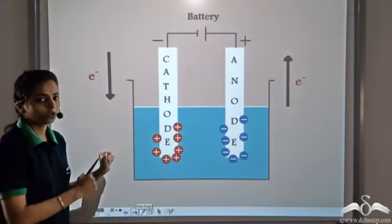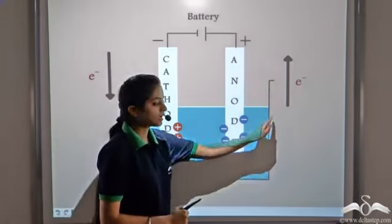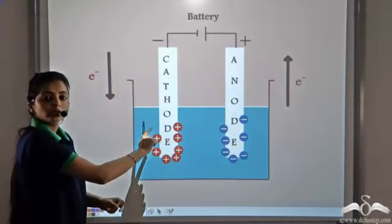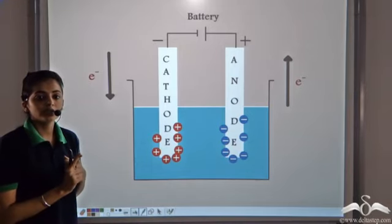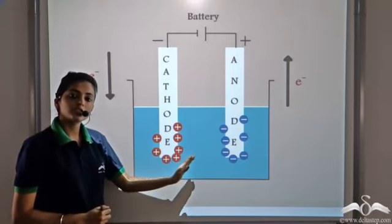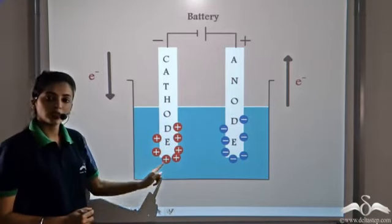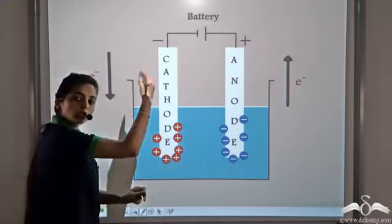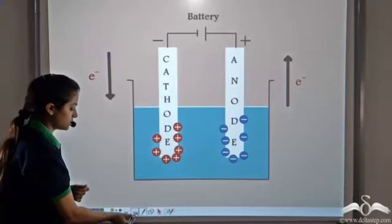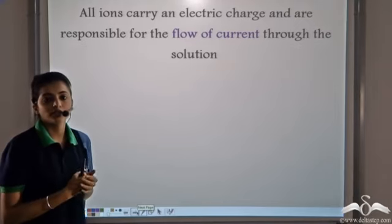When these electrons are involved, we observe that the cations take electrons from the cathode and the anions give electrons to the anode, forming a closed circuit. As you have studied in physics, electricity flows only when there is a closed circuit. Due to the presence of ions in the solution which discharge at the electrodes, a closed loop is formed which allows the passage of current through the electrolytic solution. So all ions carry an electric charge, and this allows the flow of current through the electrolytic solution.